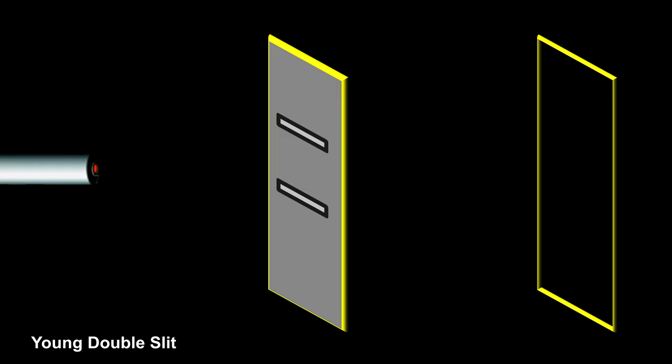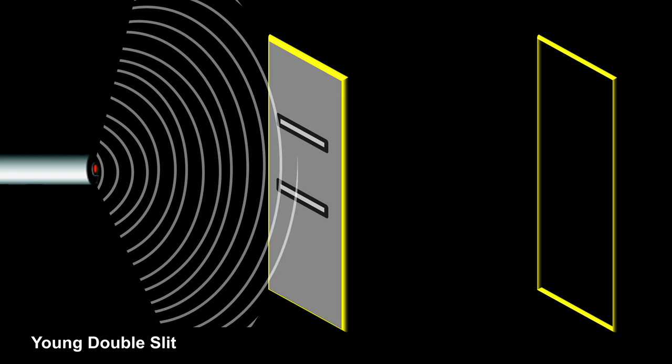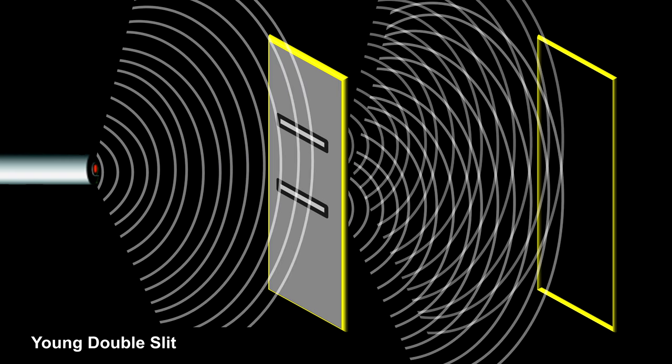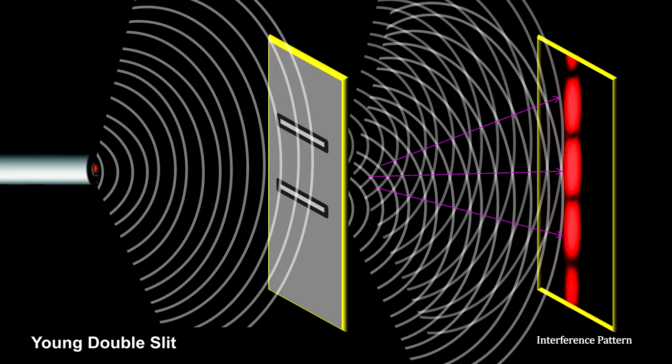But in the early 1800s, that changed based on experiments by Thomas Young. Here we see light traveling through two slits and then interfering with itself on the other side. An interference pattern is etched onto the back screen.